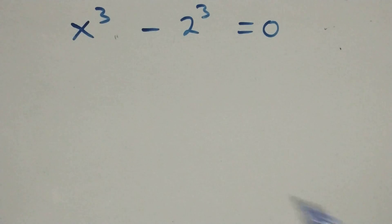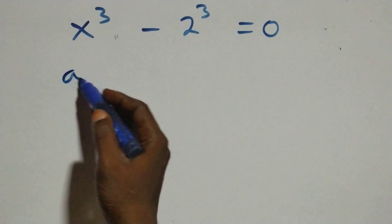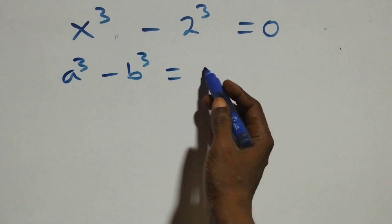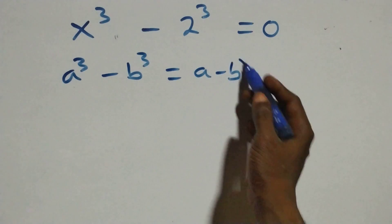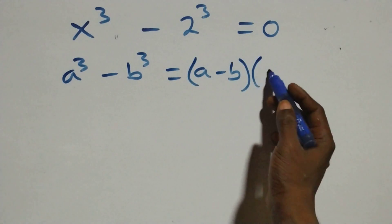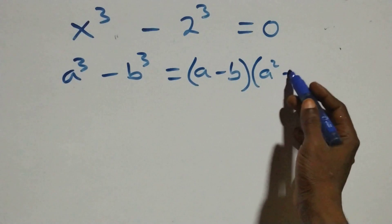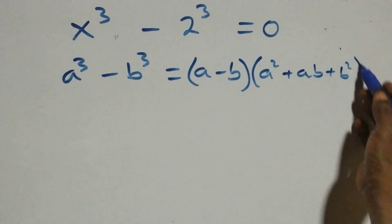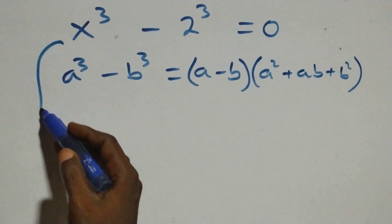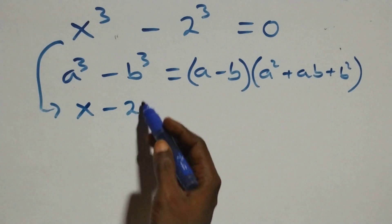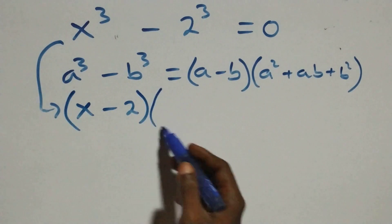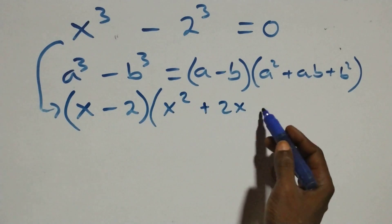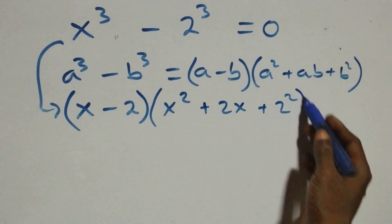Now solving the second case, x³ - 2³ = 0, we apply a³ - b³ = (a - b)(a² + ab + b²). So x³ - 2³ becomes (x - 2)(x² + 2x + 2²) = 0.